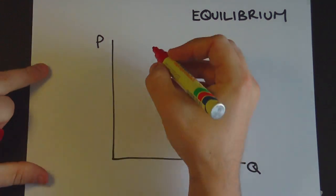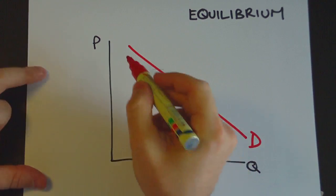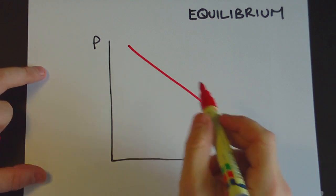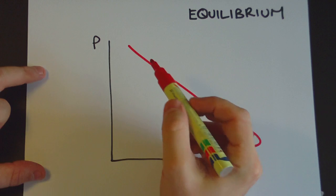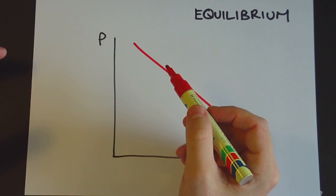Ok, firstly we've got a downward sloping demand curve. And remember why is it downward sloping? It's because people have a limited budget and if the prices of a particular good are really high then not many people can afford it.